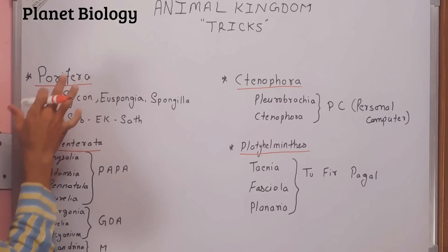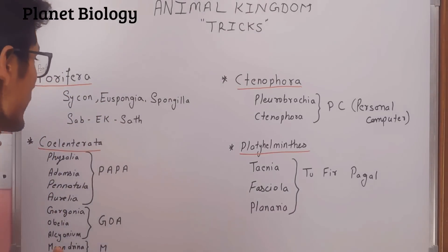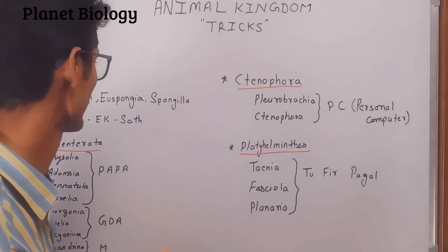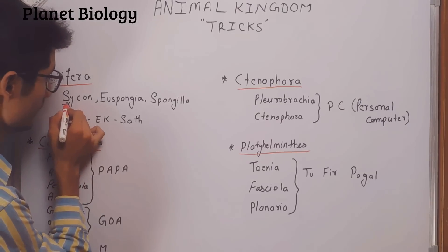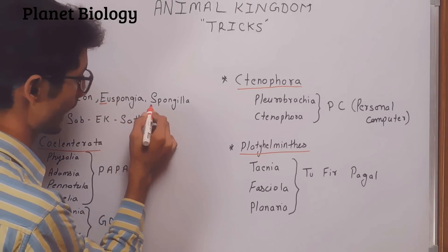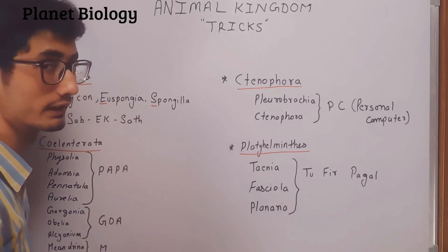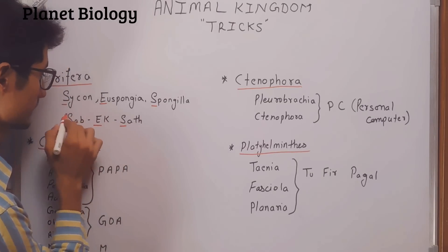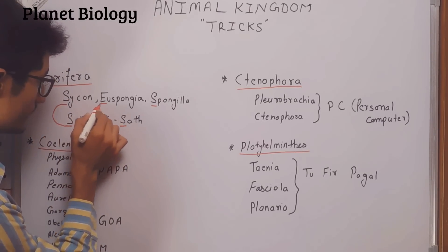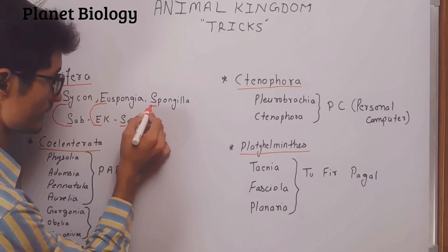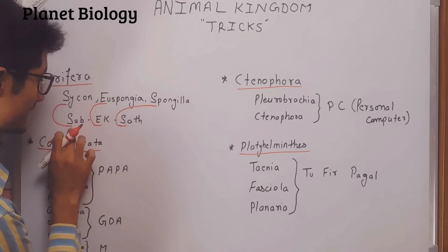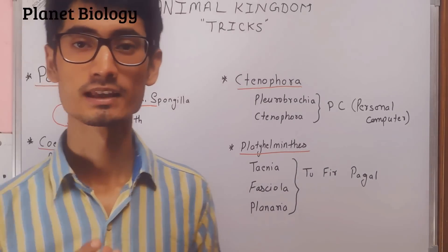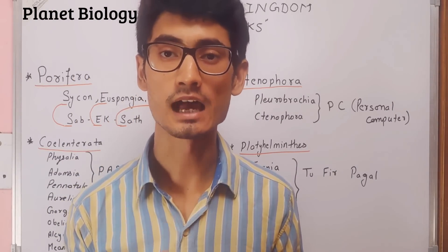Let's talk about Porifera. I will tell you who are the examples: Sycon, Spongilla, and Spongilla. The sub-level is 1, 7. The second example is Spongilla — sub-level 1, 7.